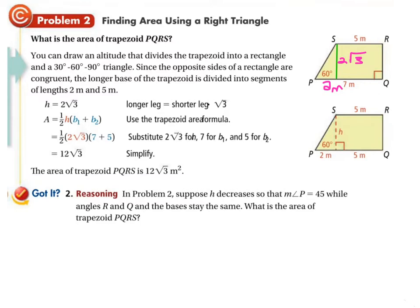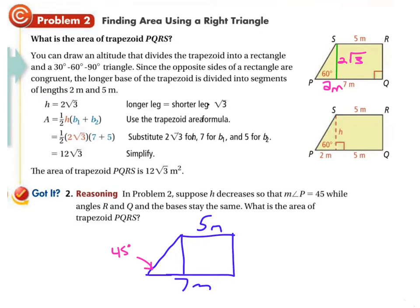Assuming that you paused it and now you're back, let's sketch this out. We've got a length of 5 here and a length of 7 here. They've changed it so that this is now a 45-degree angle in here. So what we need to do is treat it like a 45-45-90 triangle. If we know this is 5 and this is 7, then the base continues to be 5, and what's left here is 2 — this is 2 meters. In a 45-45-90 triangle, remember it's an isosceles triangle, and if these two angles are the same, then these two legs are the same, meaning the height is 2. So we've got a height of 2 meters.